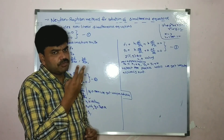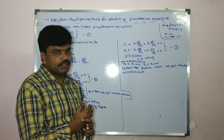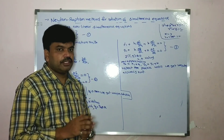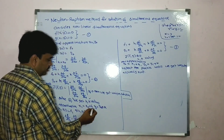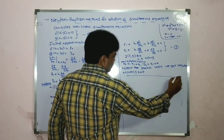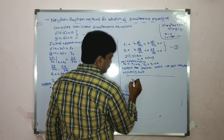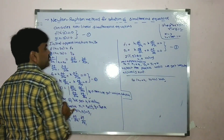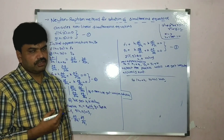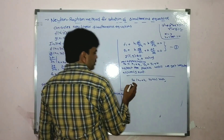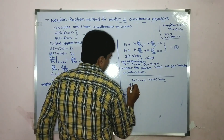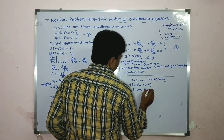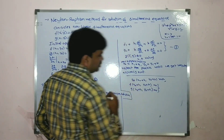The required accuracy means if three decimal places are equal in two consecutive approximations, then you get the required root. The root means whenever you substitute it in f of x0 plus h comma y0 plus k and g of x0 plus h comma y0 plus k, that equals zero.